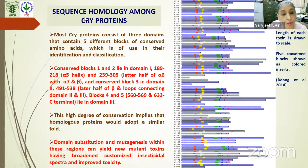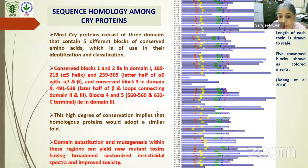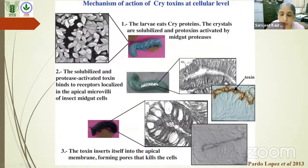There is a lot of sequence homology among Cry proteins. Five conserved blocks are seen among different Cry proteins — up to Cry74 are plotted here with five color-coded conserved regions. Conserved blocks 1 and 2 are in Domain 1, conserved block 3 (green) is in Domain 2, and the blue and pink blocks are in Domain 3. The presence of these conserved blocks indicates that Cry proteins tend to acquire a similar three-dimensional structure.